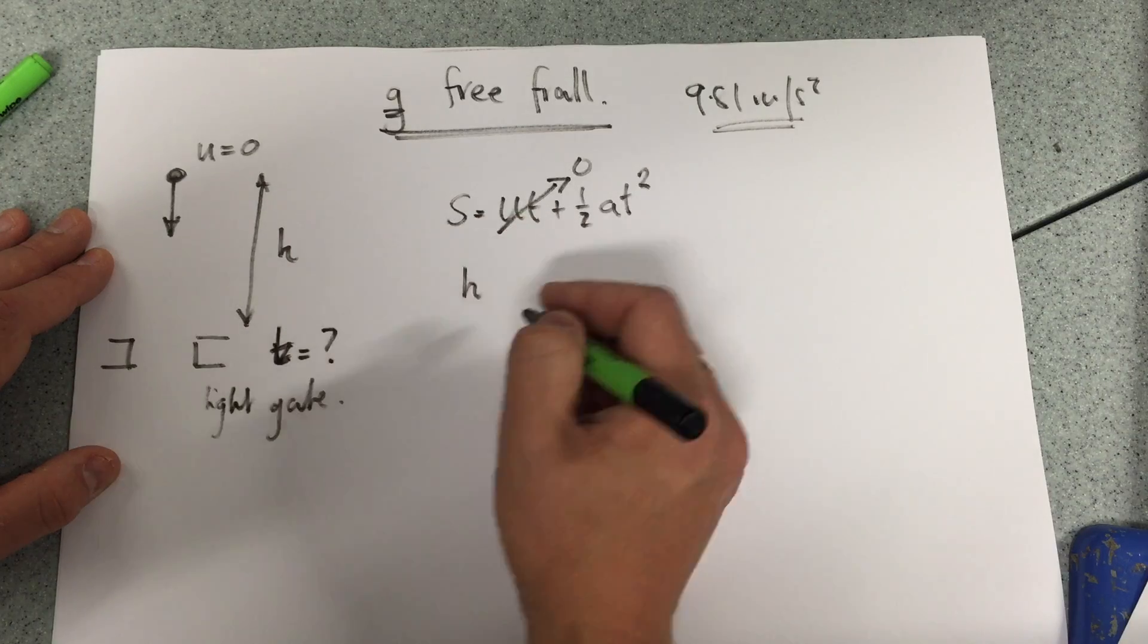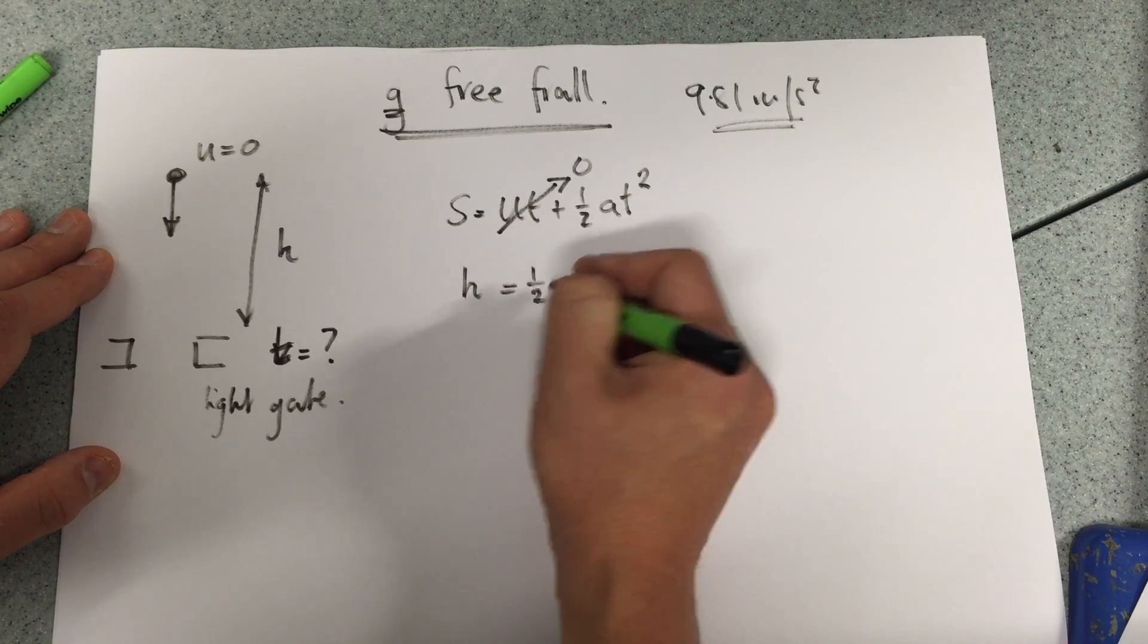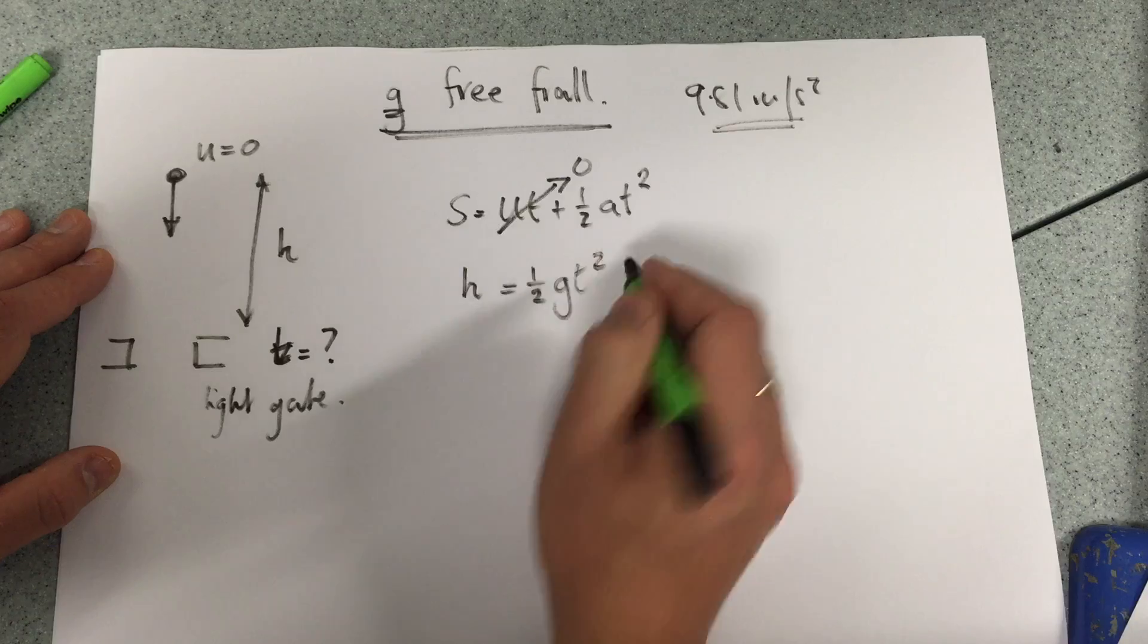Of course, the distance turns to h. So that equals a half g t squared.